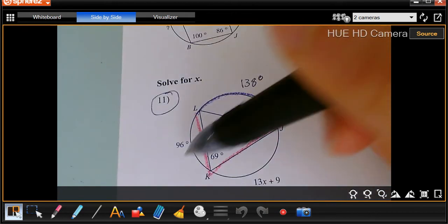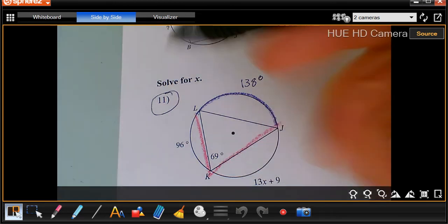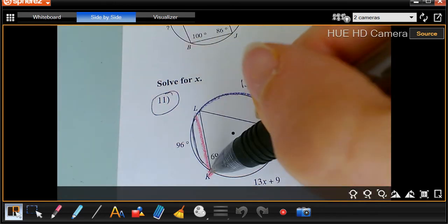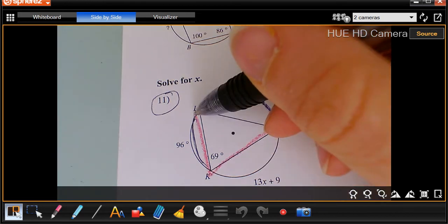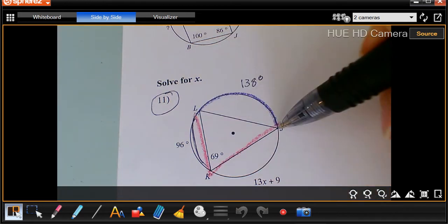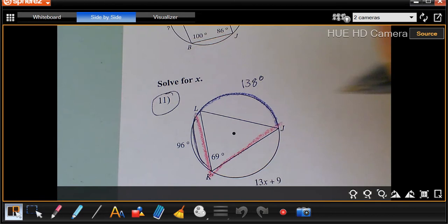Now we have all the parts of a circle except this part right here. We've got arc 96, we've got arc KL, arc LJ is 138, and we don't have JK. So we can add them up and set them equal to the angles of a circle, which is 360.